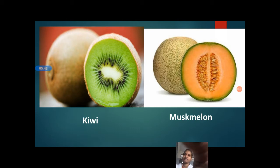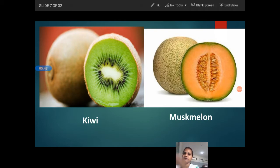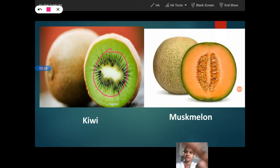See, which fruit is it? Kiwi fruit. See here. Can you see the seeds? Okay, these are the seeds. And next, musk melon. Musk melon. Here also you can get more seeds.